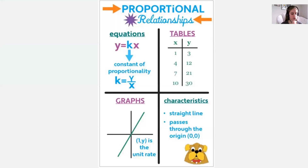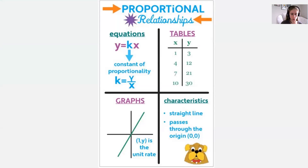A proportional relationship is a relationship — some sort of combination — where we have two variables. In this case, our variables are X and Y, because we're on the coordinate plane, on a graph. And their ratio is equivalent, is equal.